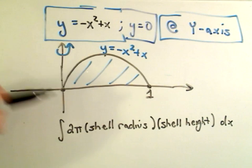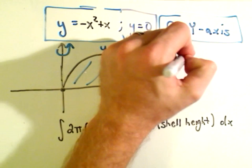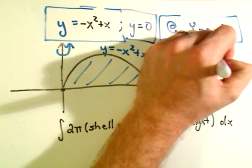I went ahead and graphed this parabola, and you can find the x-intercepts by simply setting this equal to 0. Negative x squared plus x equals 0.